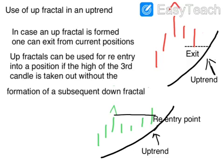Up fractals can also be used for re-entry into a position if the high of the third candle is taken out without the formation of a down fractal. If an up fractal is formed and you feel that the uptrend is likely to continue, you can hold your position, and as soon as the high of the fractal is crossed you can make a re-entry and add more to your position. This was actually the original Bill Williams method of using fractals — once the high of a fractal is taken out, you make the entry. So you can make a re-entry or even a fresh entry this way.